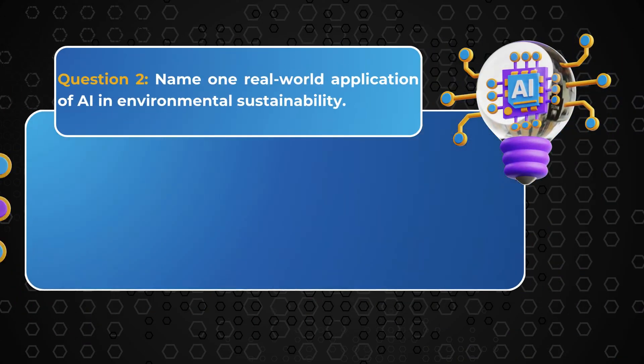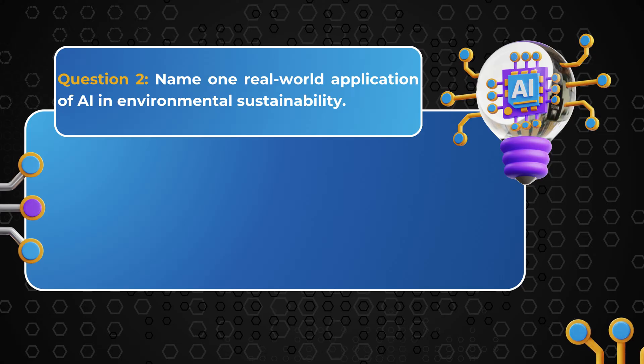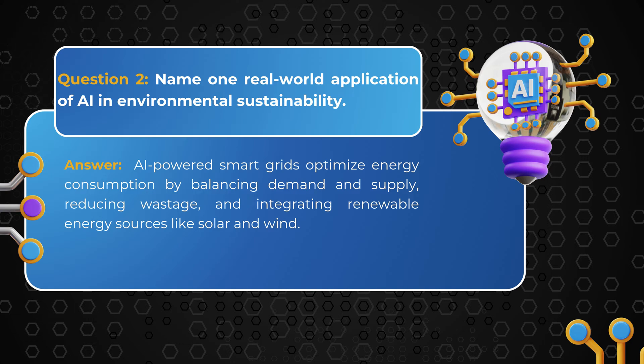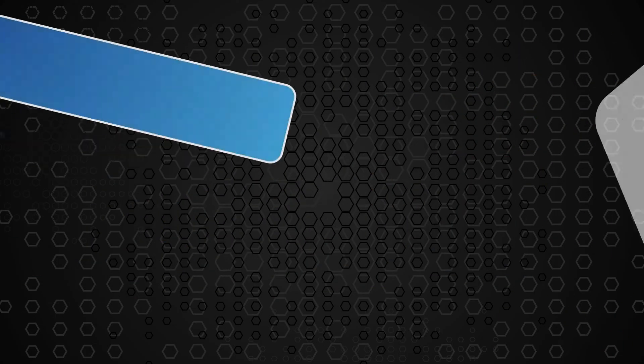Question 2: Name one real-world application of AI in environmental sustainability. Answer: AI-powered smart grids optimize energy consumption by balancing demand and supply, reducing wastage, and integrating renewable energy sources like solar and wind.